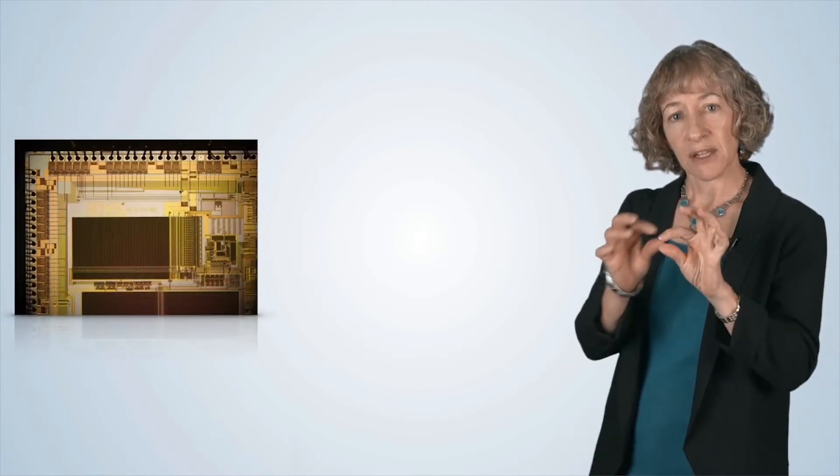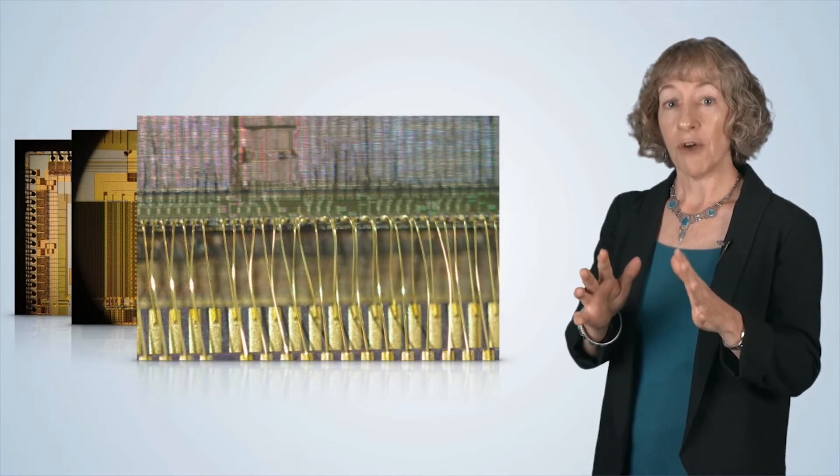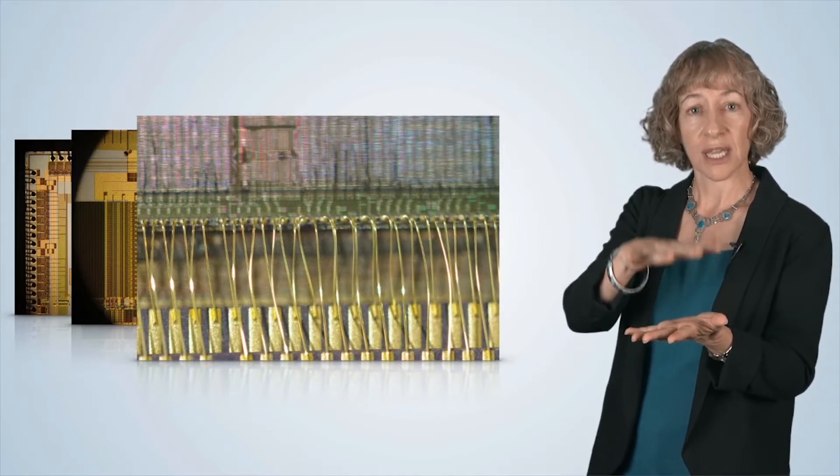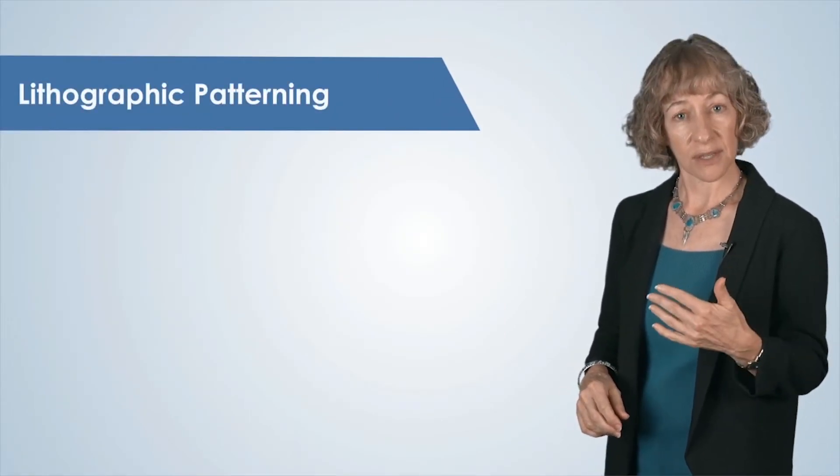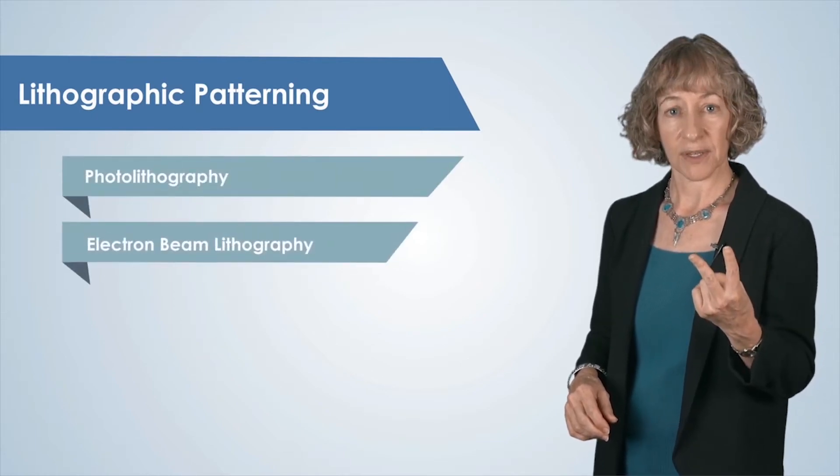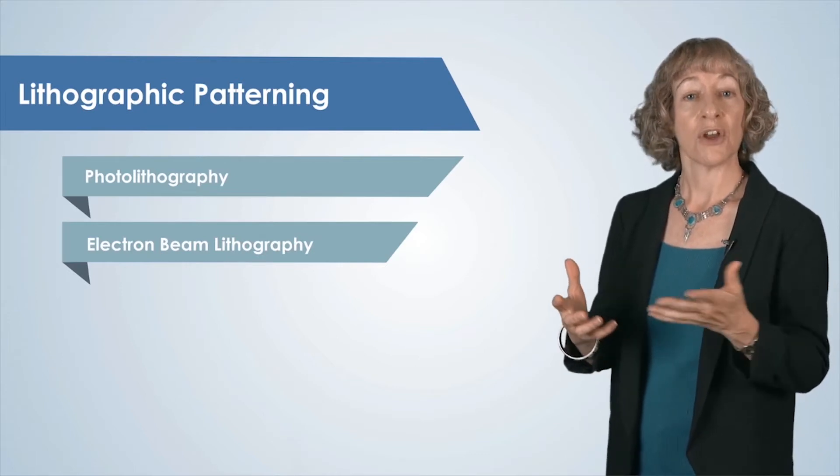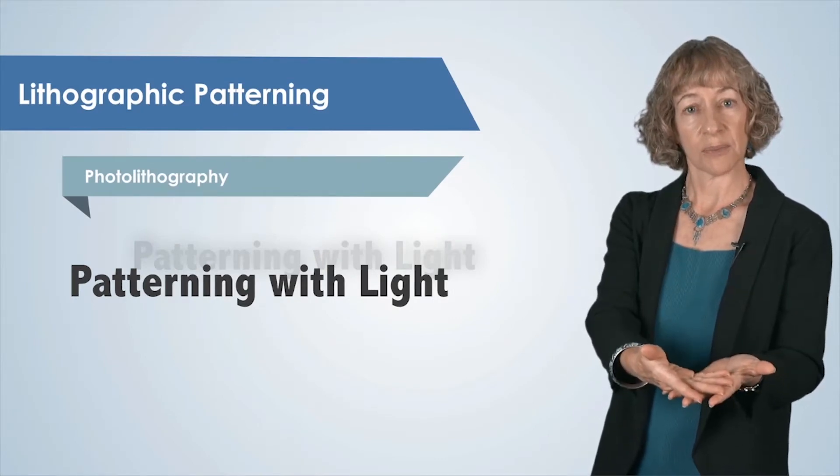This type of patterning is used a great deal when we make devices, interconnections, and structures. For example, the metal interconnect structures on an integrated circuit are very complex and often use over ten different layers of patterned metal. There are two types of lithography or patterning that we'll discuss in this course: photolithography and electron beam lithography. In this video, we will talk about photolithography, which uses light to transfer a pattern to a substrate.